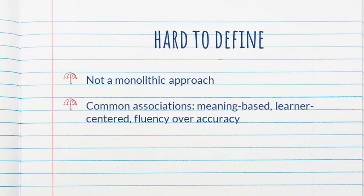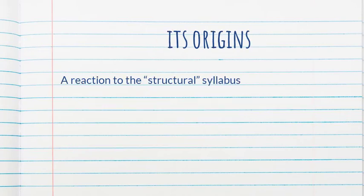Some common associations with CLT — communicative language teaching — are that it's meaning-based, that it's learner-centered, that our focus is fluency over accuracy, etc. But it's all going to depend on whether people are thinking of the strong versus the weak versions of CLT. The strong version of CLT is closer to content-based, whereas a weak version of CLT is more form-focused, but there's still communicative practice integrated in it.